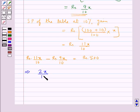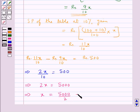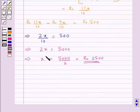2x upon 10 is equal to 500. That is we get 2x equals 5000, and from here we have x equals 5000 upon 2, which is equal to rupees 2500. And we had assumed x to be the cost price.